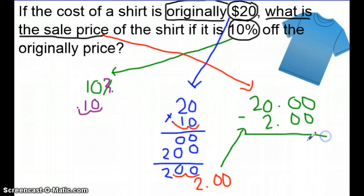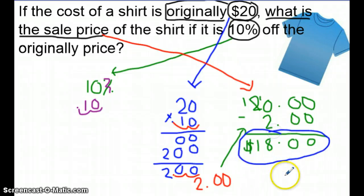So when we subtract $20 and $2, 0 minus 0 is 0, 0 minus 0 is 0, 0 minus 2 we cannot do, so we are going to borrow. 10 minus 2 is 8, 1 minus 0 is 1. Don't forget your dollar sign. So our final answer is $18. What does that mean? That means with a shirt that costs $20, if you take 10% off, the new price is going to be $18.